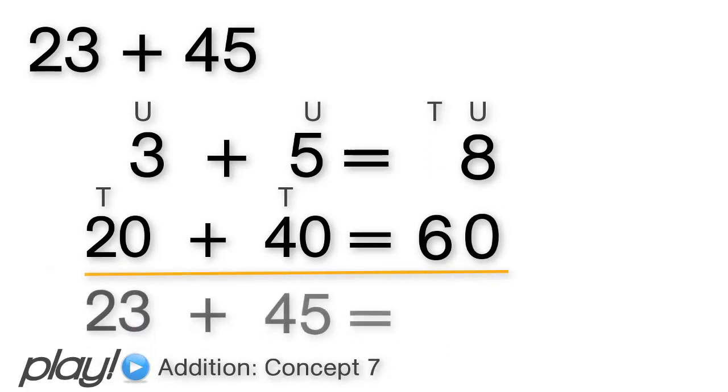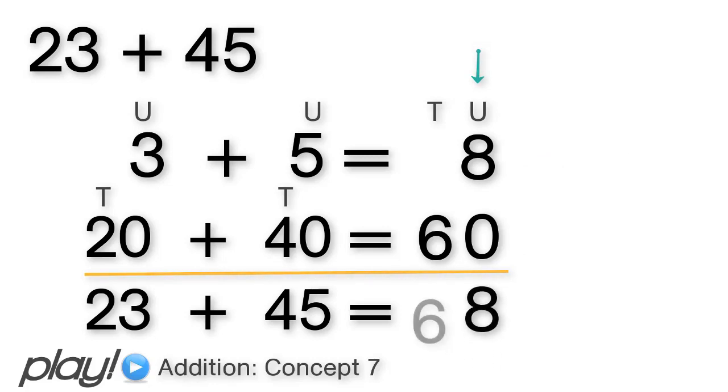Therefore, 23 plus 45 is equal to the total of those two amounts. Again, we always start with the units: 8 units and 6 tens, which means our final answer is 68.